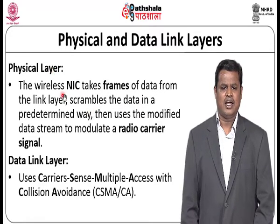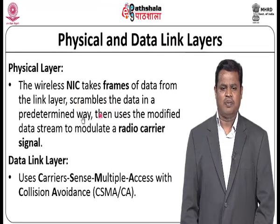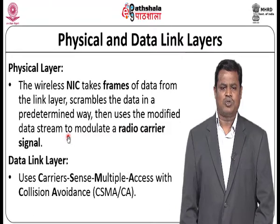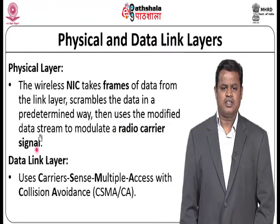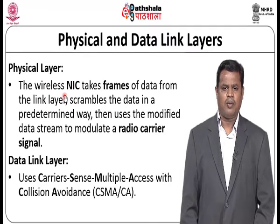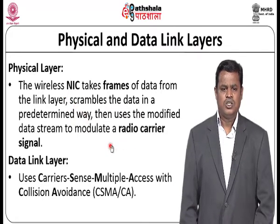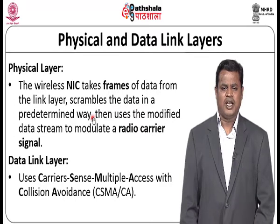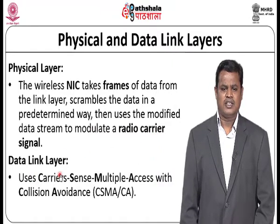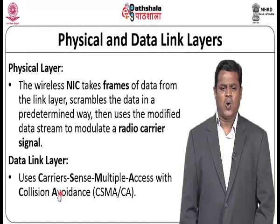In the wireless link, a network interface card takes the frame of data from the link, scrambles the data in a predefined way, then uses the modified data stream to modulate a radio carrier signal. In the wired network we put data in a wired medium like copper cable, fiber optic, or coaxial, but here we place our data in the radio carrier signal. It takes some kind of frame structure, representing the data in a predetermined way for transmission over the radio carrier signal. In the data link layer, there is a special kind of attention in wireless technology — it uses collision avoidance.